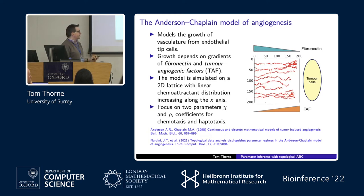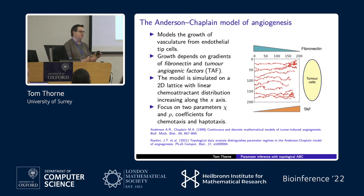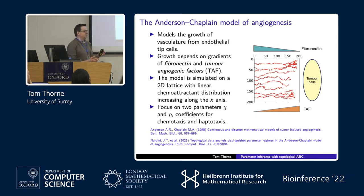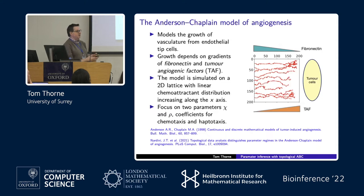In previous work, they found by simulating data from a wide range of parameter values that there were different regimes in the parameter space. For certain parameter values — perhaps where chemotaxis or haptotaxis dominated — you'd observe quite different kinds of behaviour. But what they didn't look at was how to actually infer the parameters of the model given some observed data. What we're trying to do is the inverse problem: going from some observed data to inferring a posterior on the model parameters.